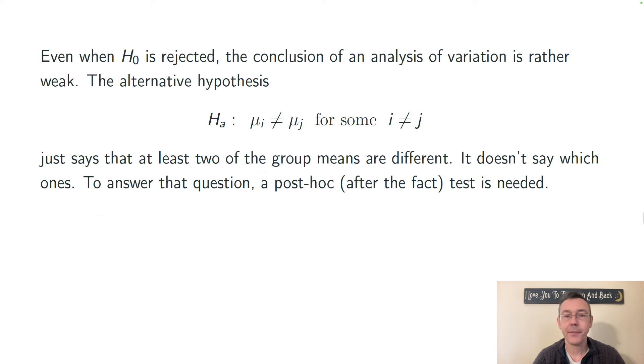Now, even when the null hypothesis is rejected, the conclusion of an analysis of variance is pretty weak. The alternative hypothesis is just that at least one of the group means is different in one group from a group mean in at least one other group. So, it doesn't say which groups are potentially different and it doesn't say how different they potentially are.